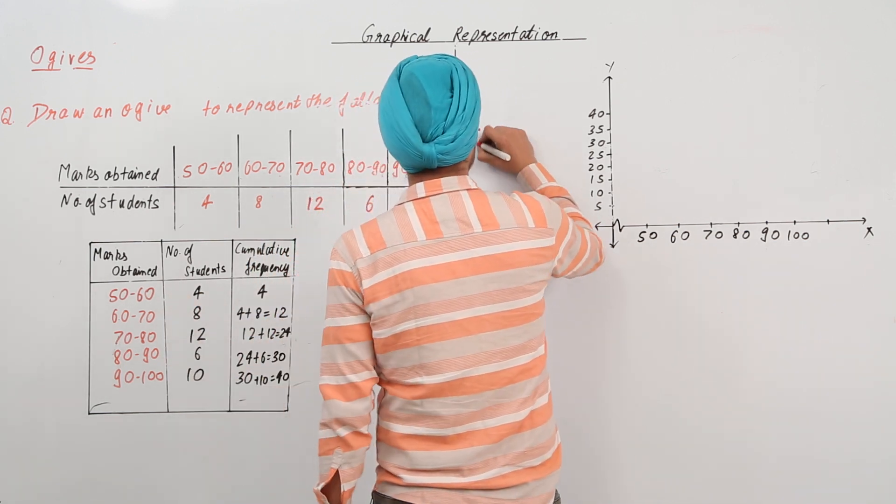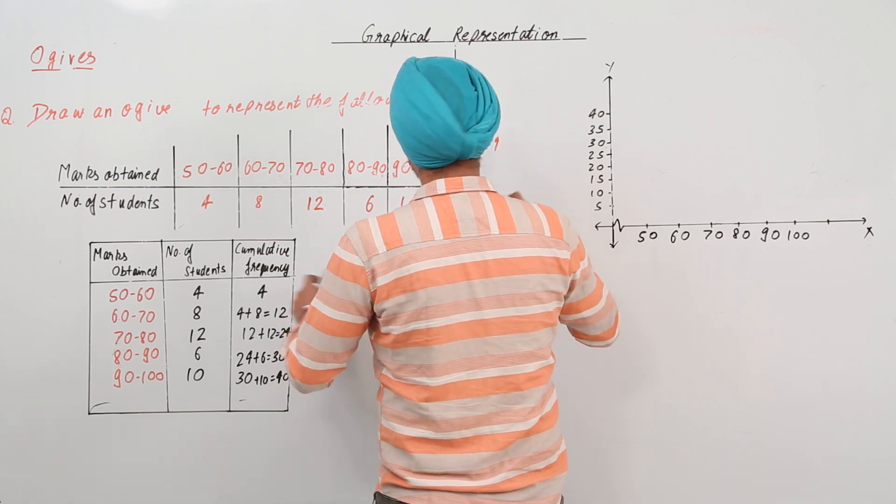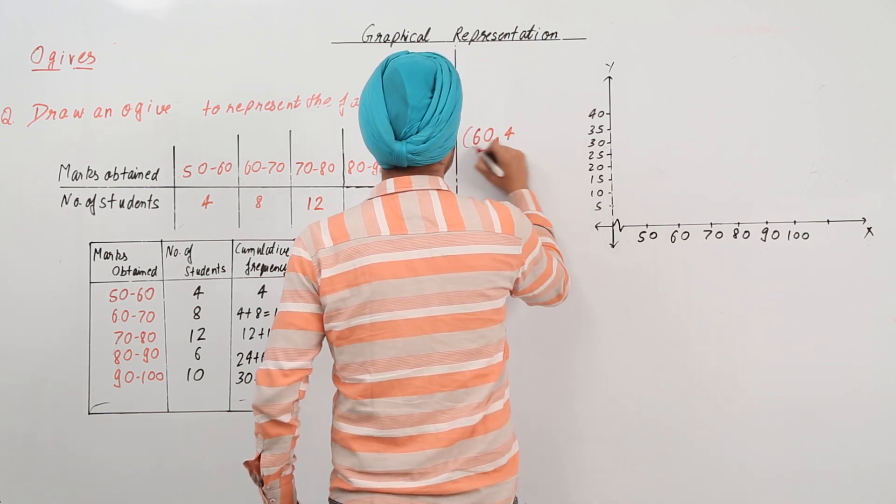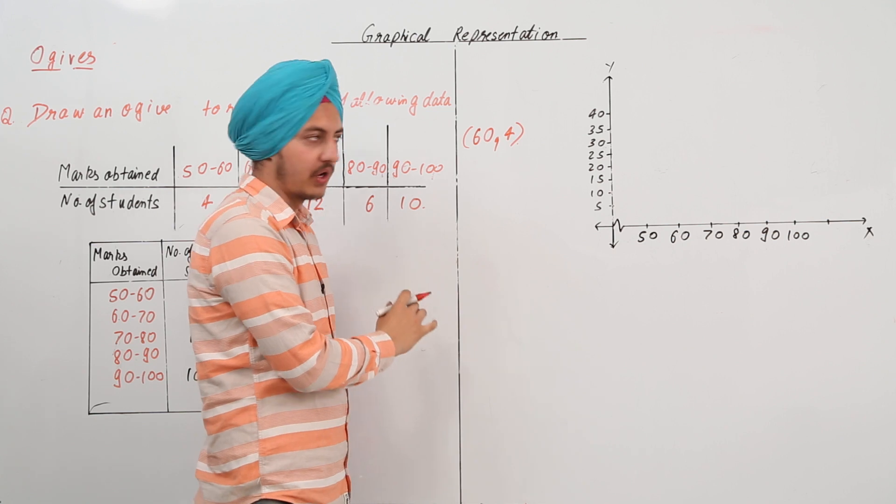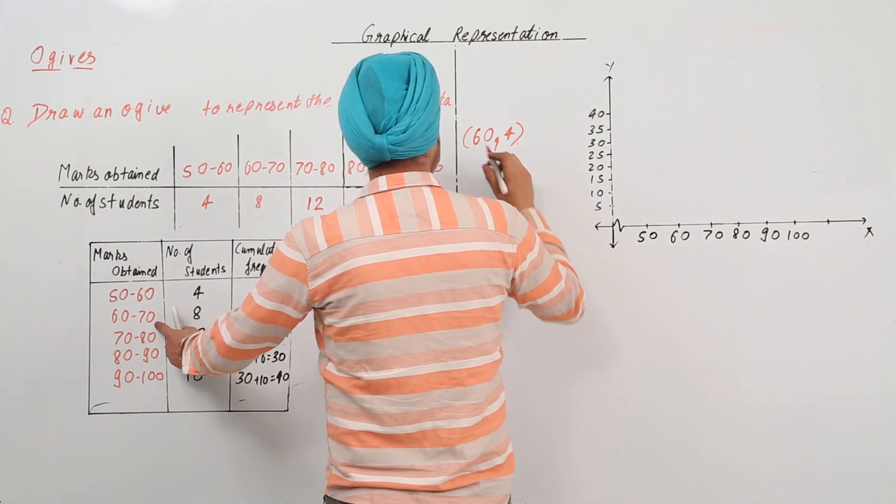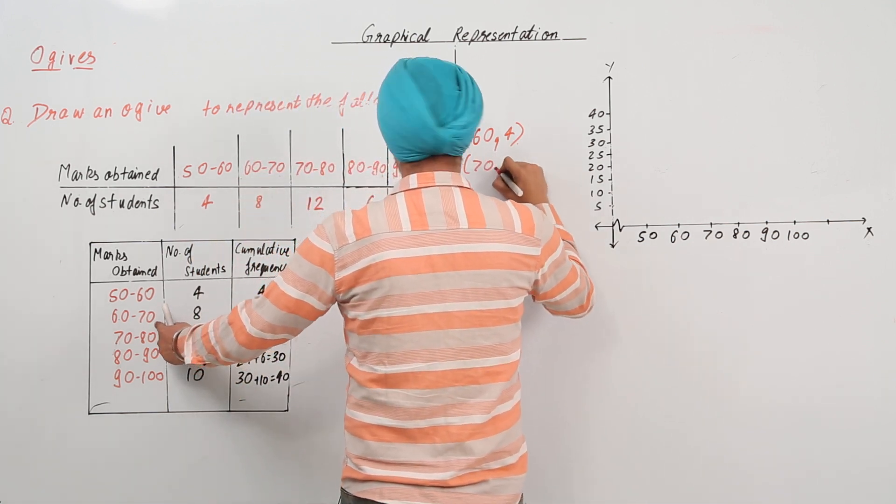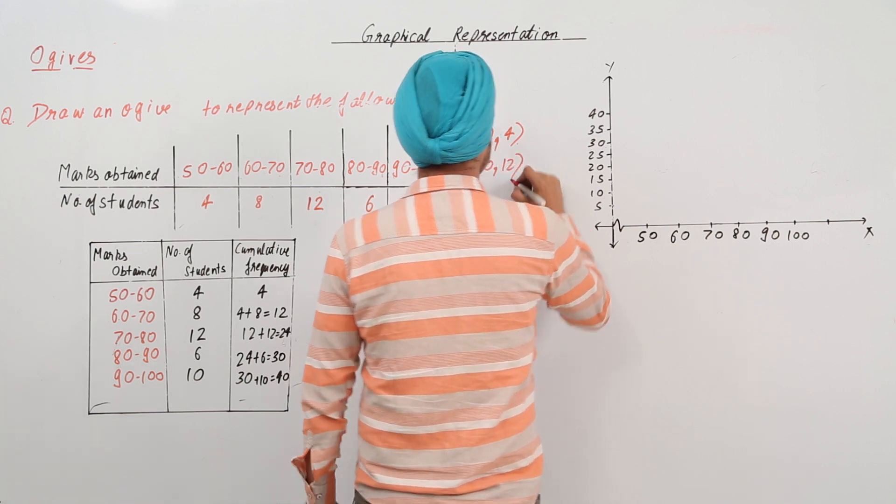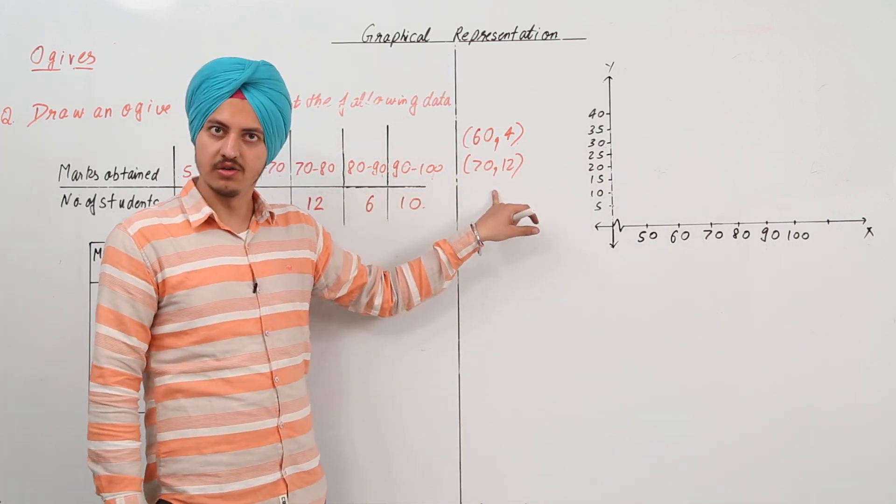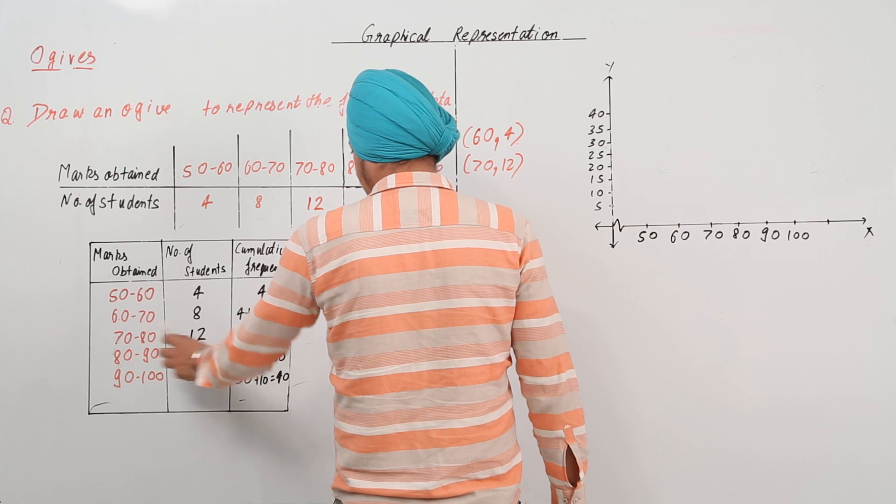Tell me what all points do we get? If we see 60, with 60 what is the cumulative frequency? It's 4. The first point. The second point is 70, what is the cumulative frequency? 12.